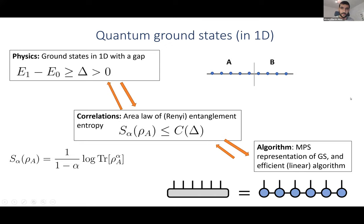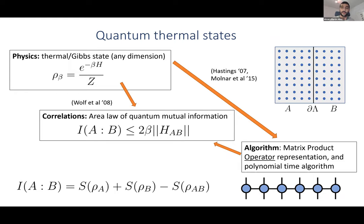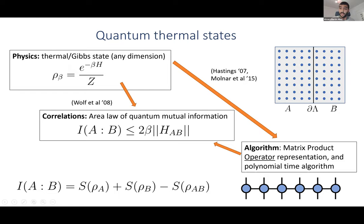Now let me draw the analogous picture known for thermal states. Many results are known even for any dimension, not just one dimension. The physical situation is that we have a Gibbs state, and there are two separate facts. One is that thermal states satisfy an area law, and the key quantity here is the mutual information, which will be the main quantity I talk about for at least half of this talk. This term here is basically the norm of the interaction Hamiltonian between two different parts — if I divide my lattice into subsystems A and B with a boundary, this norm scales like the boundary, giving an area law.